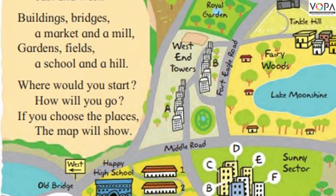Buildings, bridges, a market and a mill. Gardens, fields, a school and a hill.